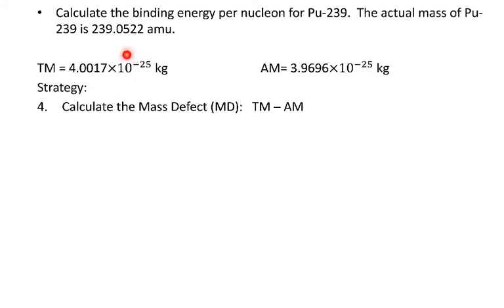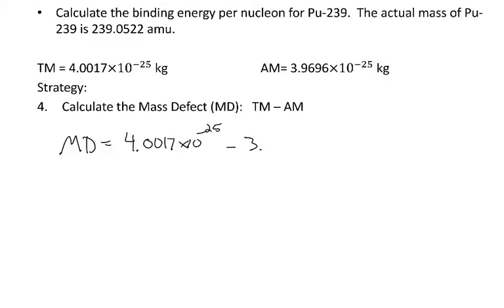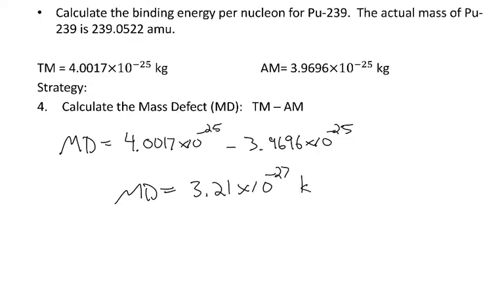Here's the theoretical mass we got from adding up the protons, neutrons, and electrons, and this is the actual mass now converted to kilograms. The mass defect is the difference between those two numbers, so all I need to do is take the theoretical mass and subtract the actual mass. The mass defect I calculate is 3.21 × 10⁻²⁷ kilograms.